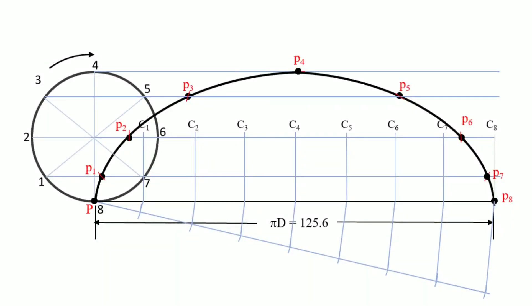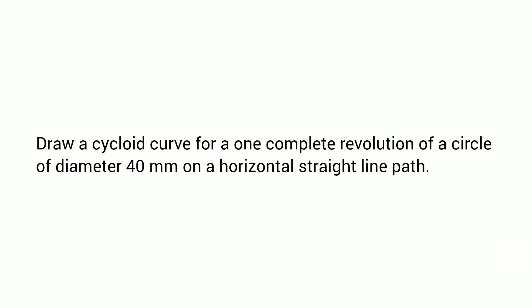Hello friends, today we will see how a cycloid can be drawn. A cycloid is a curve that can be traced by a point which is present on the circumference of a circle rolling on a straight line path. Any point traced on that circumference while rolling gives the cycloid. As per the problem, we are supposed to draw a cycloid curve for a diameter of 40 mm.